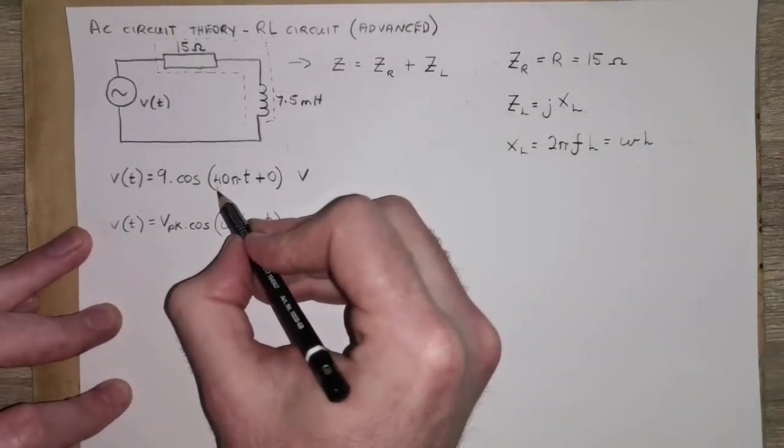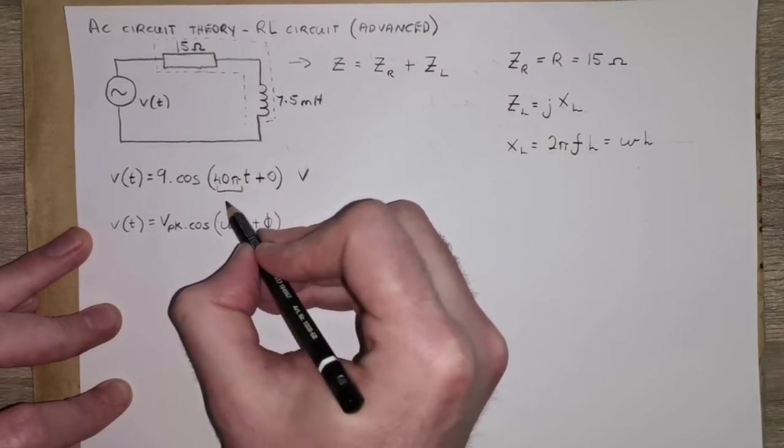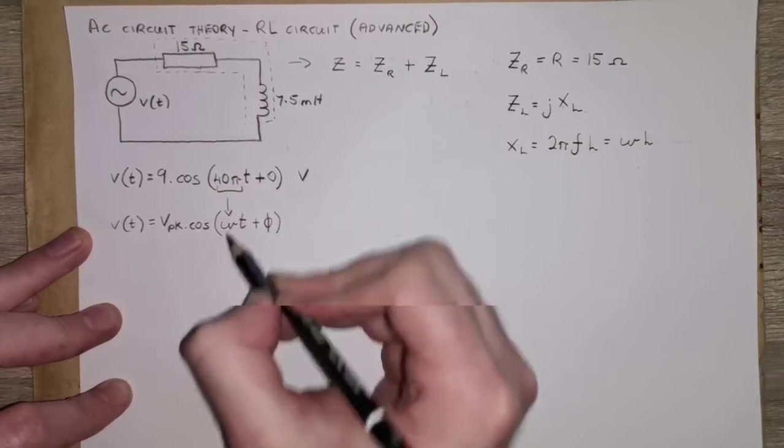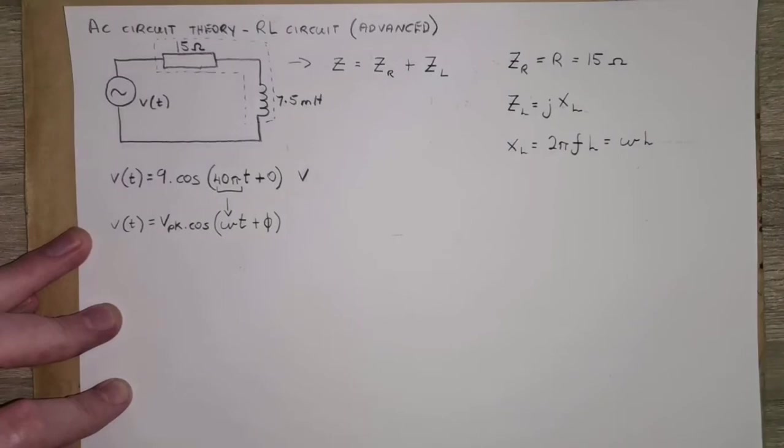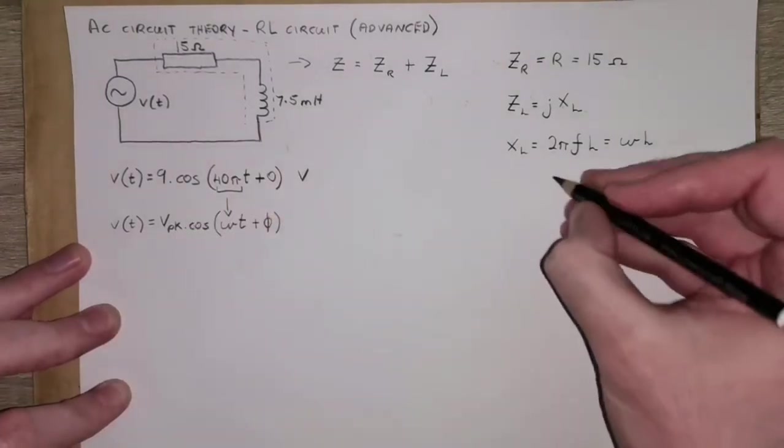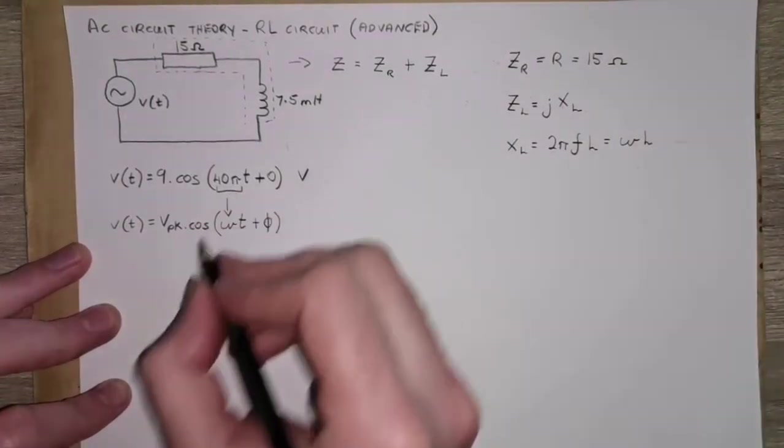So if you're looking for the frequency in radians per second, we're actually given it in the form here. So in this question, omega is actually equal to 40 pi.